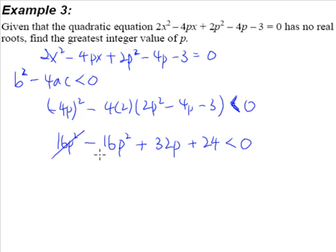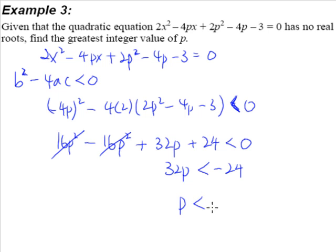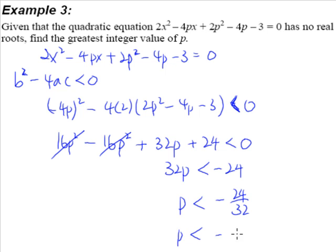This 16p squared will cancel with this 16p squared, and therefore when you shift the 24 over it becomes negative 24. Working it out, you will have p being less than negative 24 over 32, which is actually negative 3 quarters. So p has to be less than negative 3 quarters.